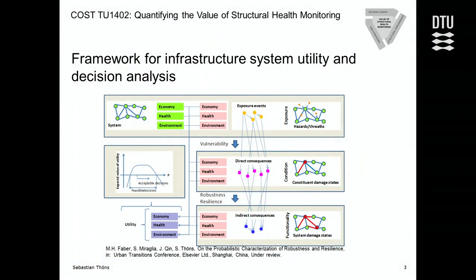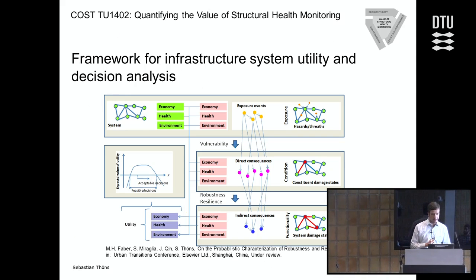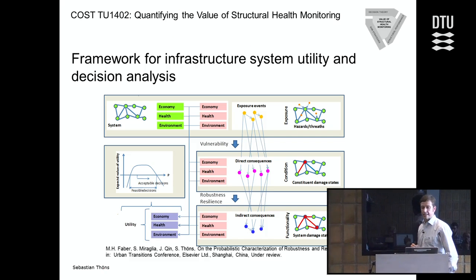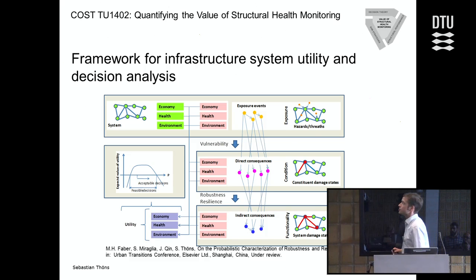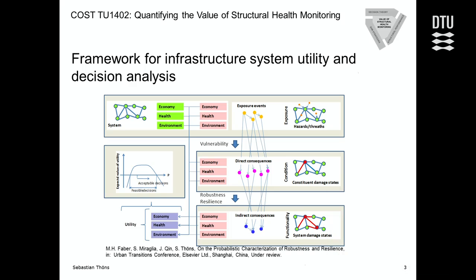An overview about the framework related to different system states: we have the intact system, a system under exposure events, under constituent damage states and system damage states, accounting for the scenarios. For each of the system states we can quantify consequences and benefits in terms of economy, health, and environment. With a consistent formulation we may be able to formulate such a utility function and to optimize our actions.